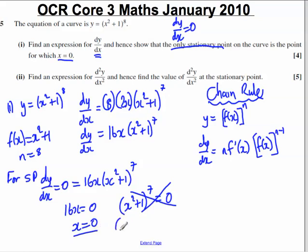Therefore, the only stationary point, the only stationary point is at x is equal to 0, as required. Thank you very much.